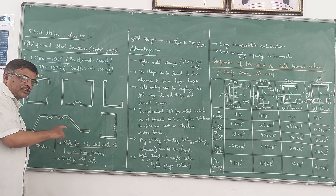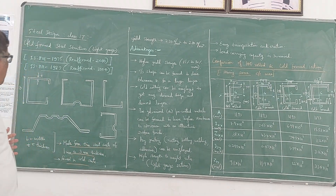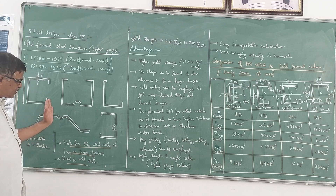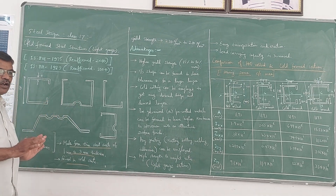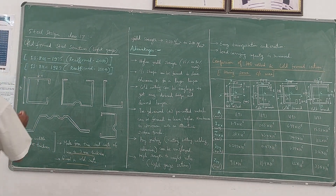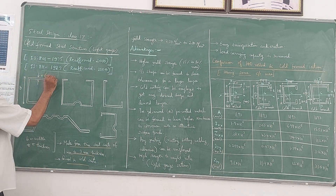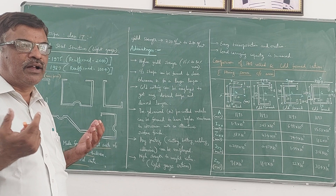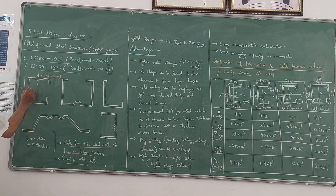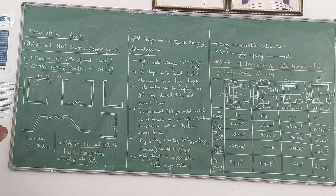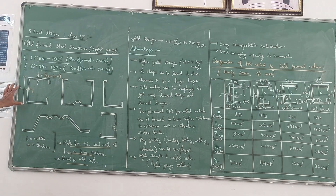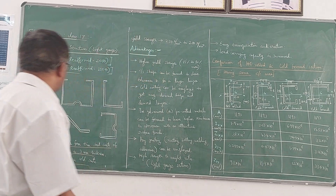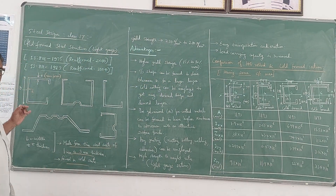Normally, the shapes we come across in cold form steel structures include a channel shape or a handle shape. In cold form steel sections, T represents the thickness, and this thickness is kept uniform throughout the section. In contrast, hot rolled sections have different thickness for the flange and the web. Here both flanges and web are thickness T, and B refers to the width of the section. The profile of the cross section is decided based on the type of structure, the load, and the end conditions.